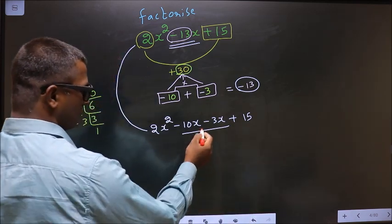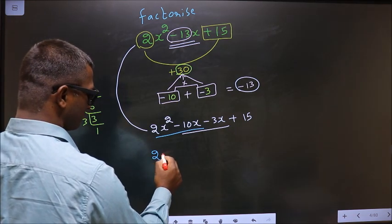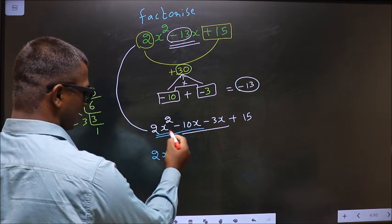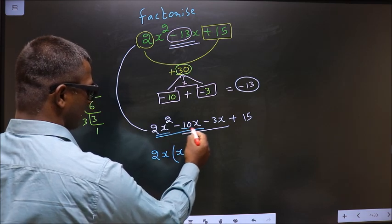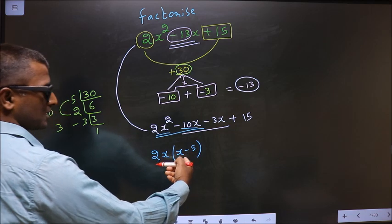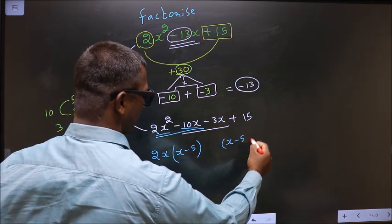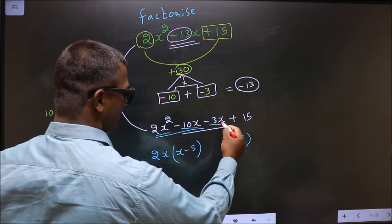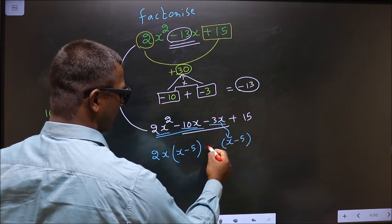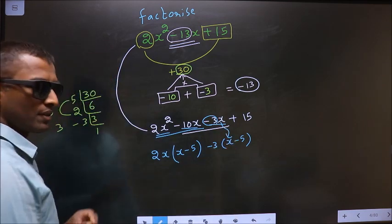Now what you can take out common from these two terms is 2x. So here you're left with x, and here you're left with 5. Here you got x - 5, so here also you should get x - 5. From -3x, x has gone inside, so outside should be -3.